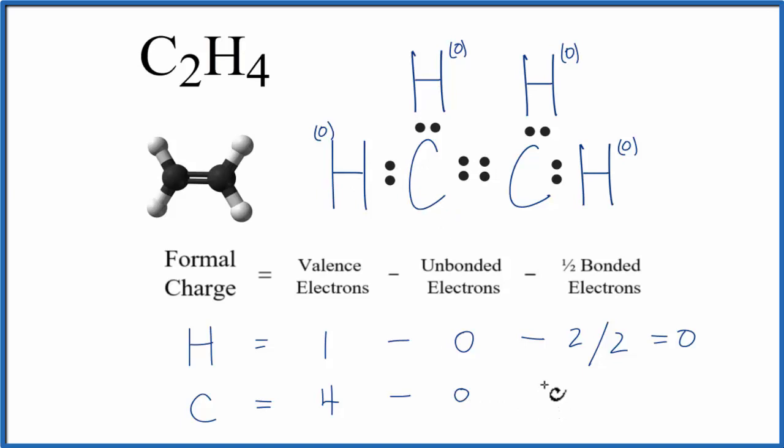unbonded valence electrons. We'll subtract one-half of the bonded valence electrons: 2, 4, 6, 8.